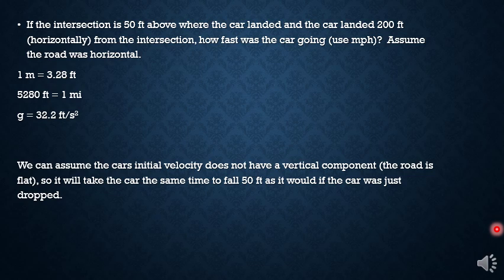The road is essentially horizontal there. So we're going to assume the car's initial velocity does not have a vertical component. That means that the road was traveling horizontally. It wasn't going up or down right when it left the road. So it would take the car the same time to fall 50 feet as it would if the car was just dropped.